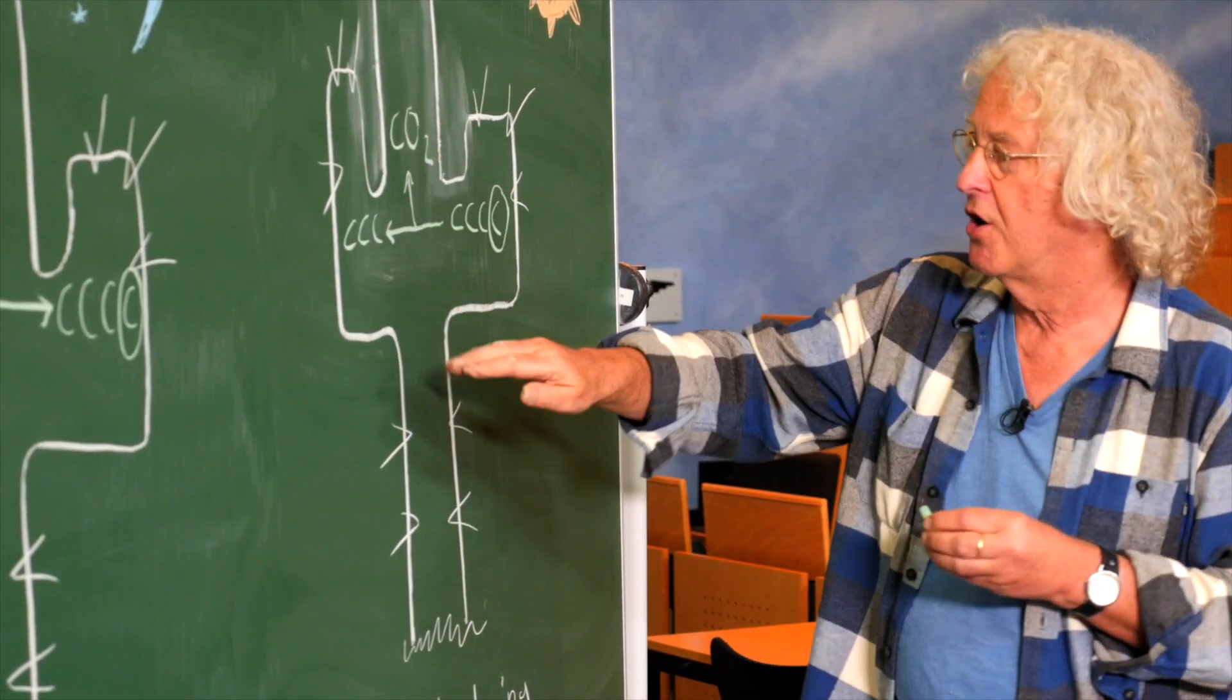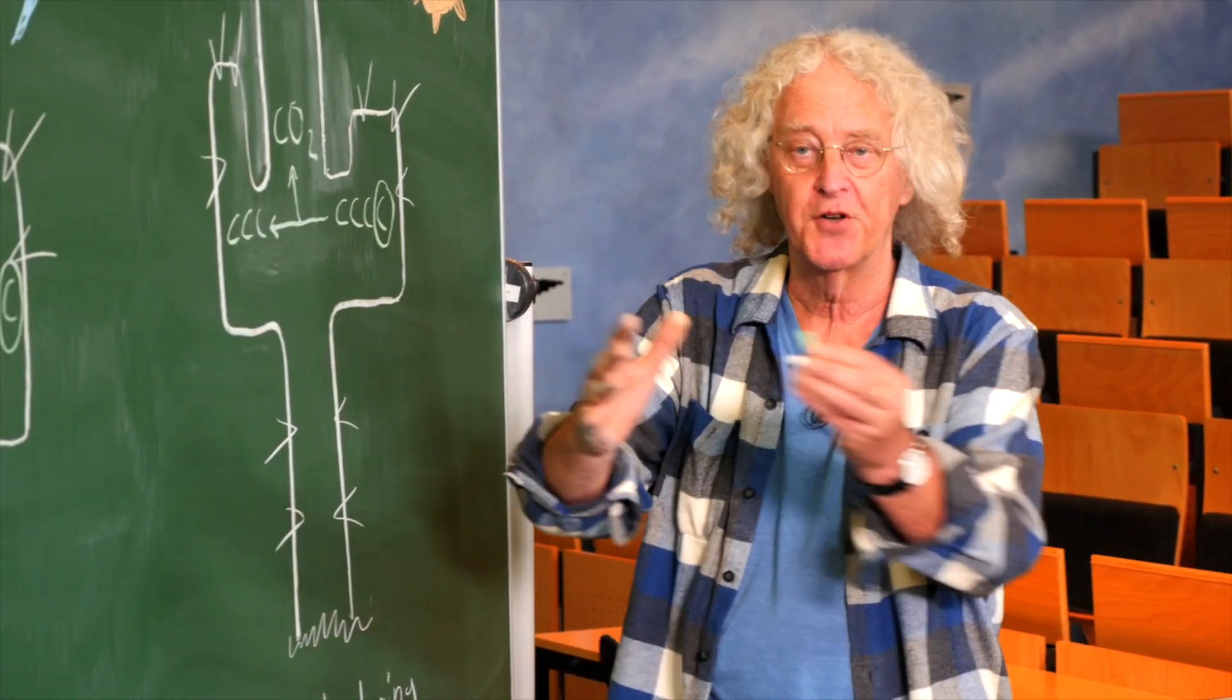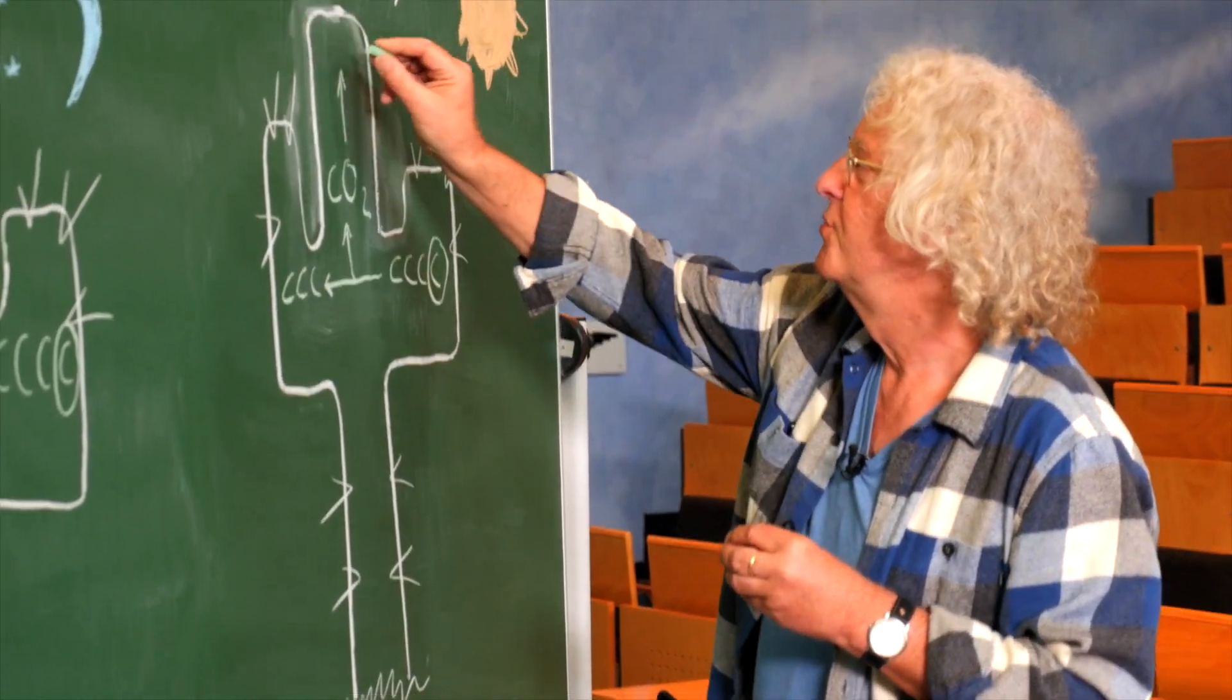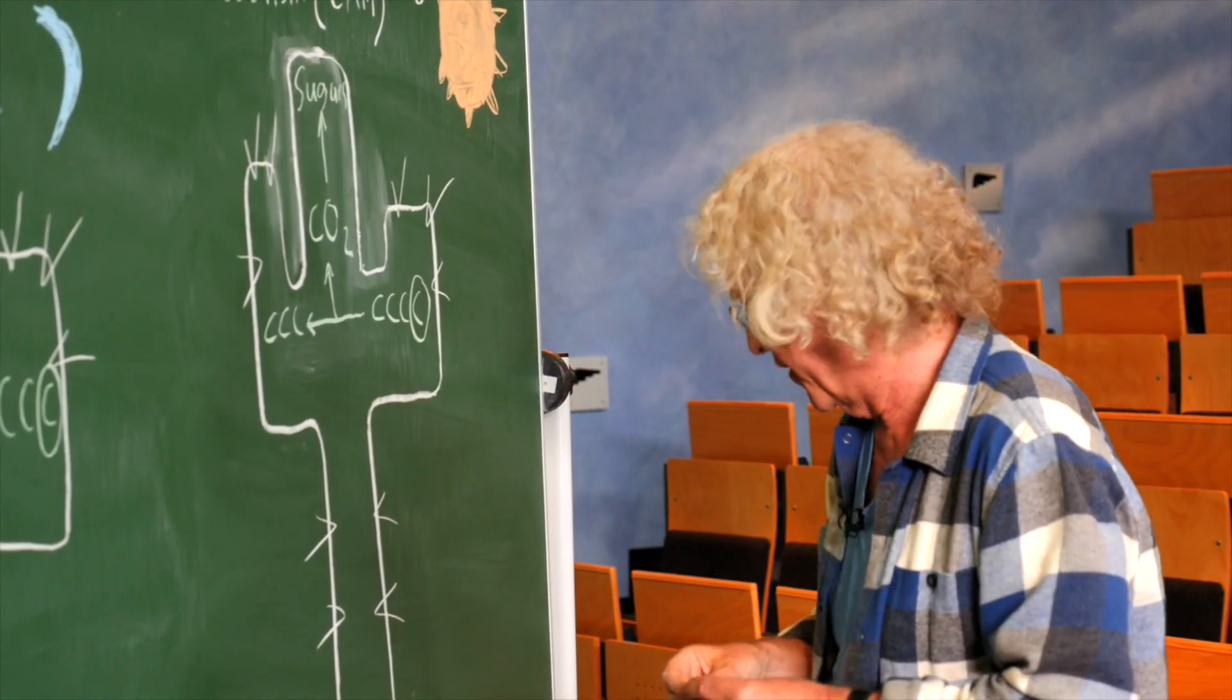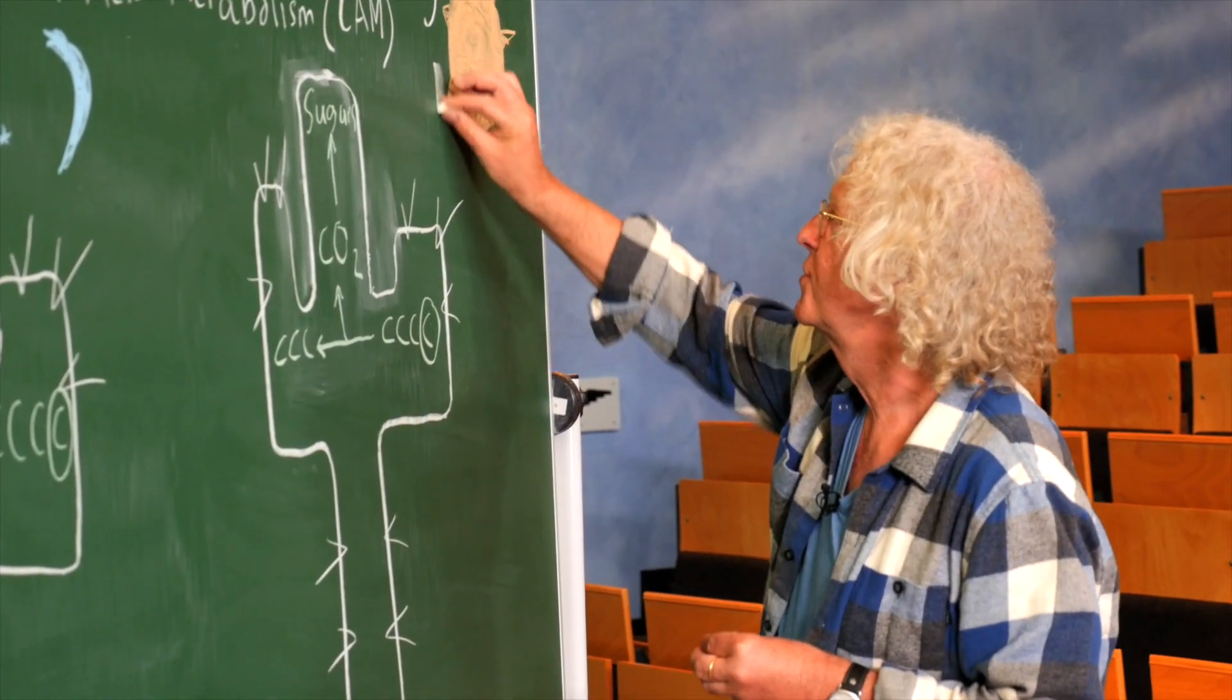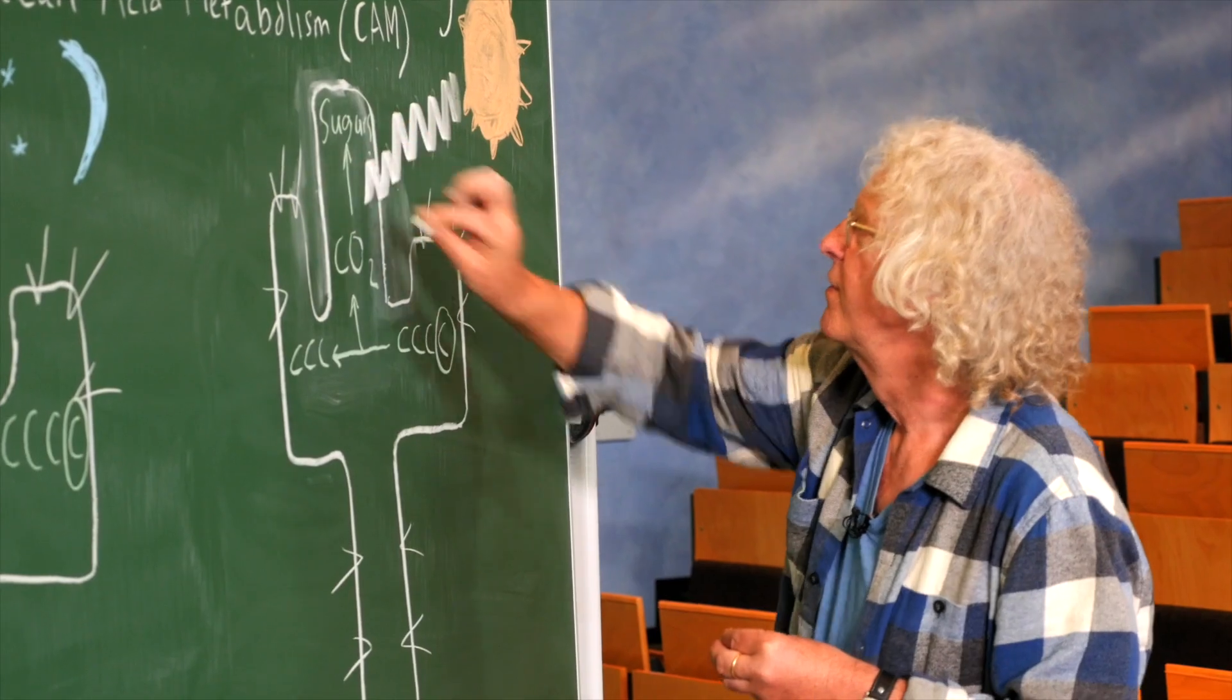The carbon dioxide can't go out because the stomata are shut. And instead, it's used to make sugars and other things, and of course using the energy from the sun.